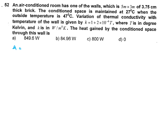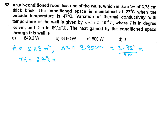Given: area = 5 × 3 m², thickness Δx = 3.75 cm divided by 100 = 0.0375 m. Inside temperature: 27°C = 27 + 273 = 300 K. Outside temperature: 47°C = 47 + 273 = 320 K.